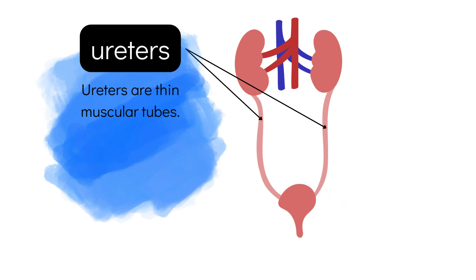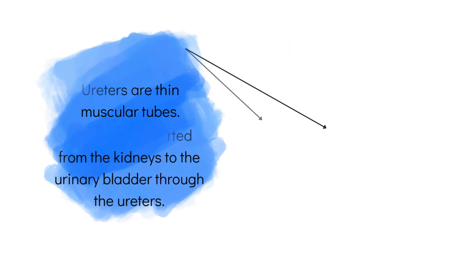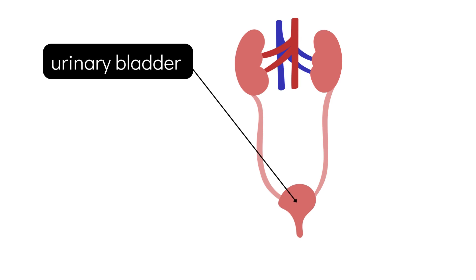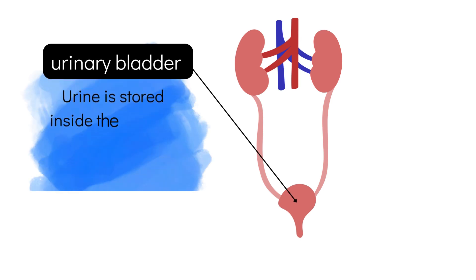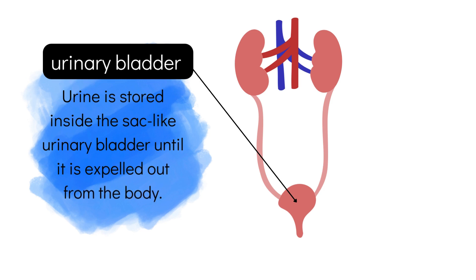Urine is stored inside the sac-like urinary bladder until it is expelled out from the body.